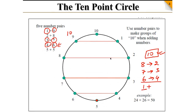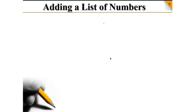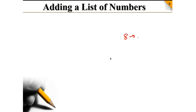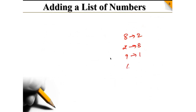If one number is 1, the second number is 9. What is the pair of 8? 2. What is the pair of 7? 3. Pair of 5 is 5, pair of 6 is 4, pair of 3 is 7, pair of 2 is 8, pair of 9 is 1, pair of 7 is 3, pair of 8 is 2, pair of 6 is 4, pair of 5 is 5.